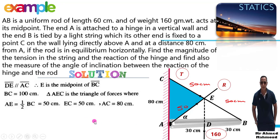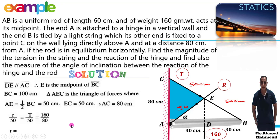R/50 = T/50 = 160/80. So R = 50 × 160/80 = 100 gram-weight, and T = 50 × 160/80 = 100 gram-weight.